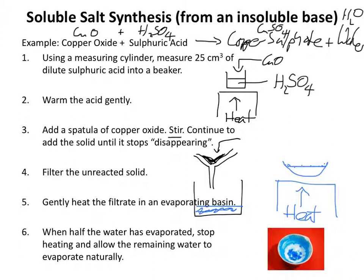You might think it would be quicker to heat it very strongly and evaporate the water using the Bunsen flame. That would be quicker, but it runs the risk of overheating it. Copper sulphate will thermally decompose — it will break down if heated too strongly — so you wouldn't end up forming copper sulphate. It's safer to allow the rest of the water to evaporate naturally.